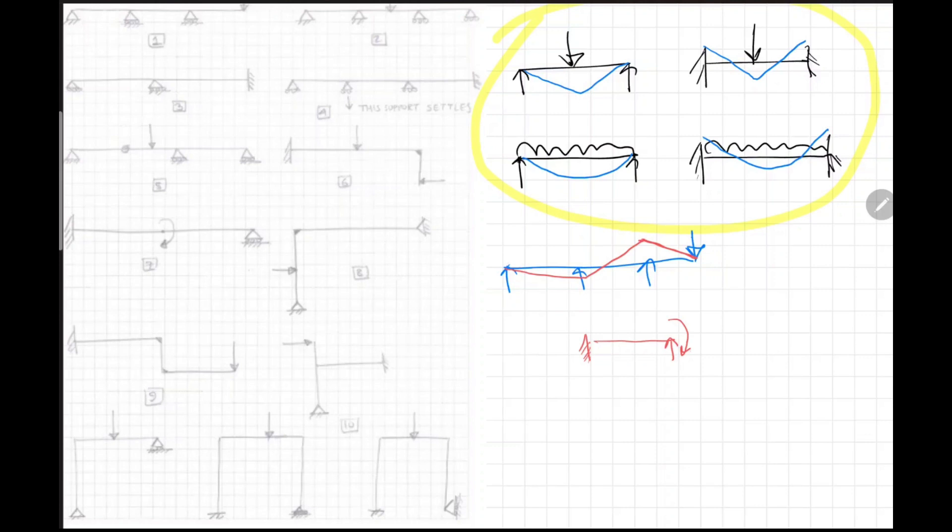Let's take the second question. This one - three span continuous with load at mid span. Since we don't have load here, this will become like continuous beam with point load. The bending moment diagram will be like this and it will be zero. This is the bending moment diagram for the second problem.